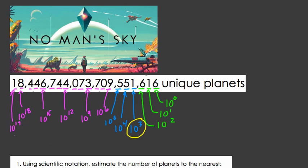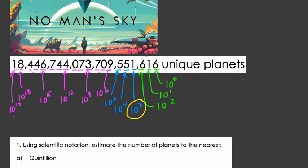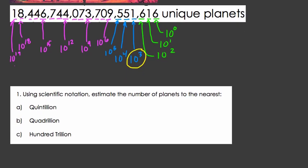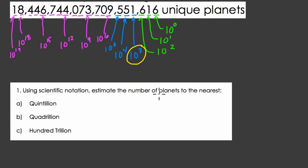So here, we can ask lots of questions about this. Let's start with just playing around with this number before we get to some other aspects. And we can ask lots of questions here. So this question says, using scientific notation, estimate the number of planets to the nearest quintillion, quadrillion, and 100 trillion.